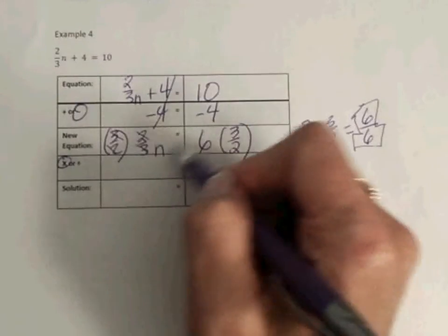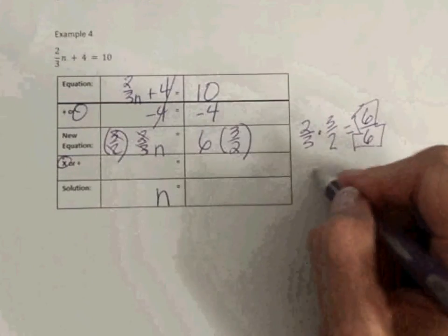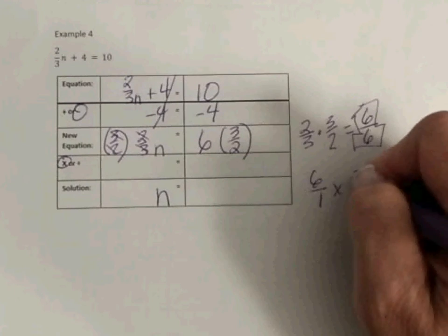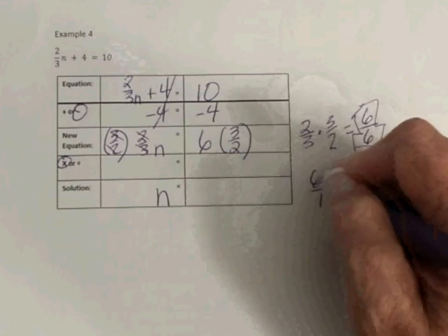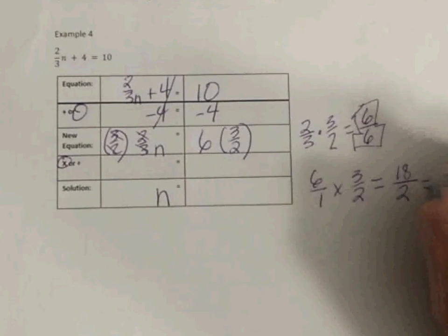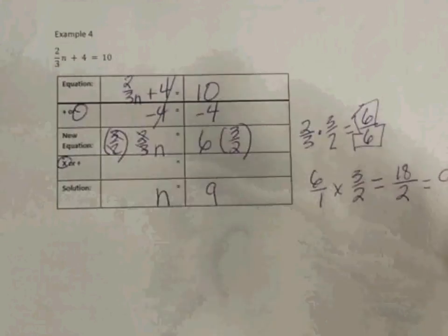These cancel each other out. All I have left over here is 1n. I'm going to come out over here, and I'm going to multiply these. I'm going to make that 6 an improper fraction. 6 times 3, 18. 1 times 2, 2. And that equals 9. So n equals 9.